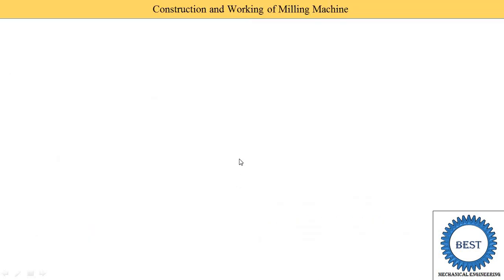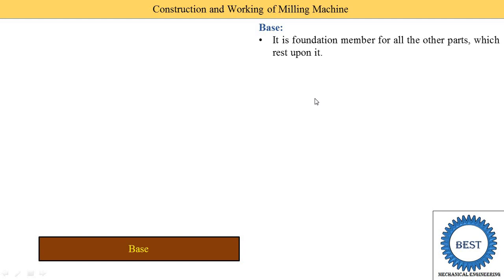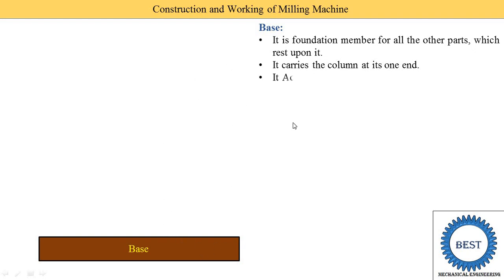First we understand the most important part of the milling machine, which is the base. The base is the foundation member for all other parts which rest upon it. It is the main foundation, and above the base all other components are mounted. It carries the column at its one end.